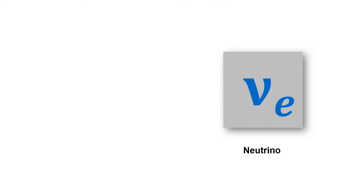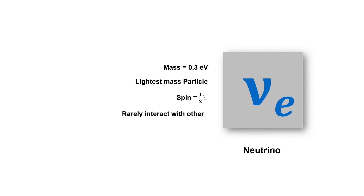The neutral lepton is also called the neutrino. Neutrinos rarely interact with any other particle, making them very difficult to observe. The neutrino is an elementary neutral particle of infinitesimal mass — less than 0.3 electron volts — making it the lightest particle among all mass-bearing particles. So far, three neutrino particles associated with the three charged leptons have been discovered.